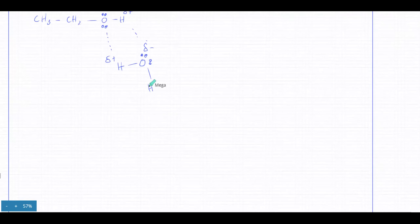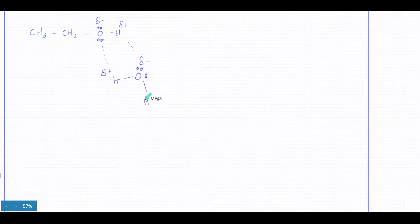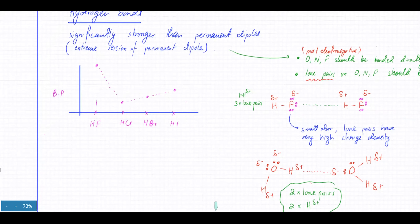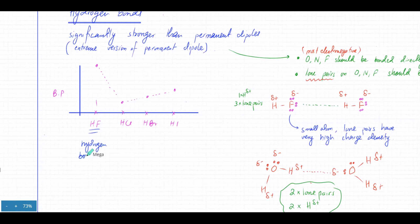Hydrogen bonding is significantly stronger compared to permanent dipoles. If a molecule has hydrogen bonding, its melting and boiling points are going to be significantly higher compared to permanent dipoles. The reason is that the lone pair is very concentrated - it has a high charge density - which is why the attraction is much stronger.